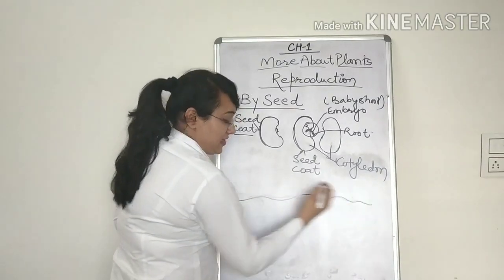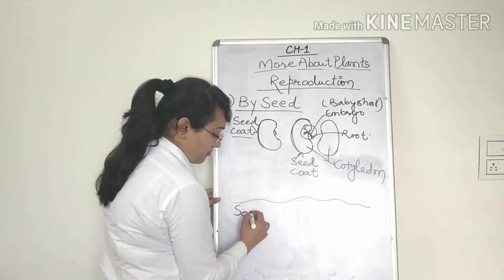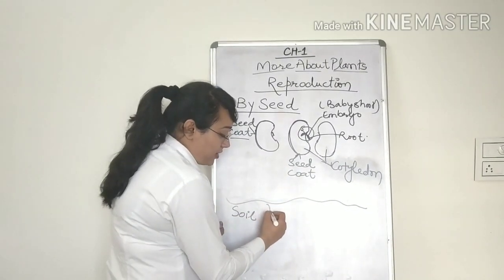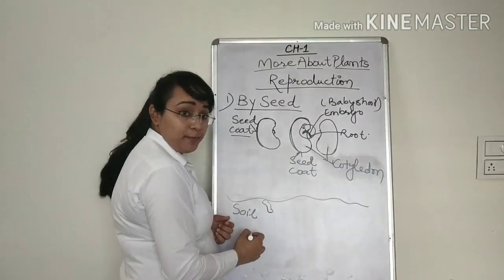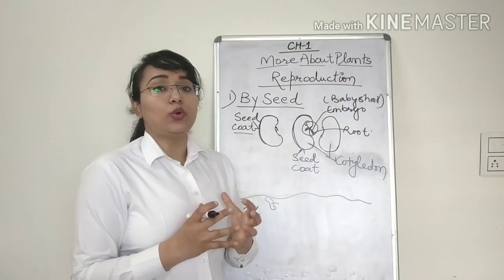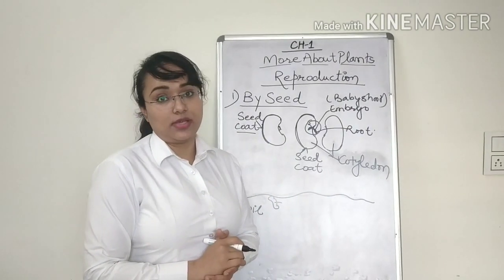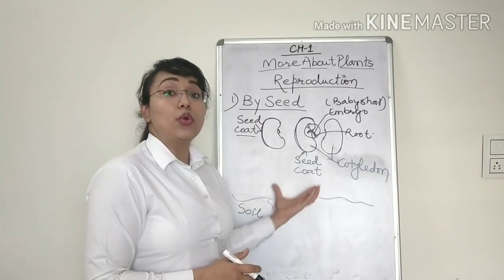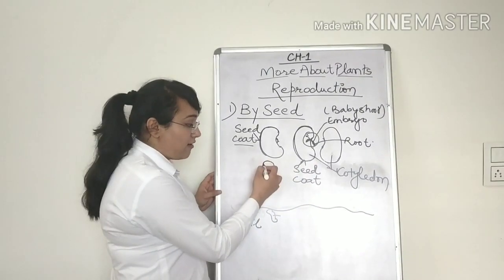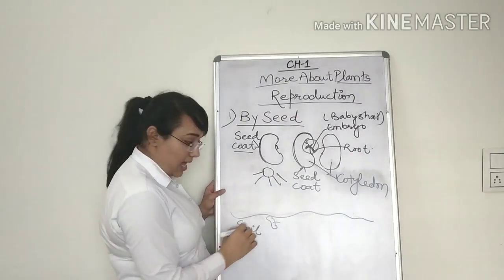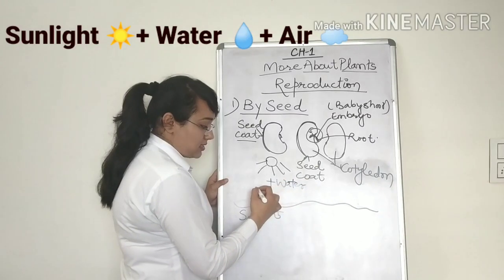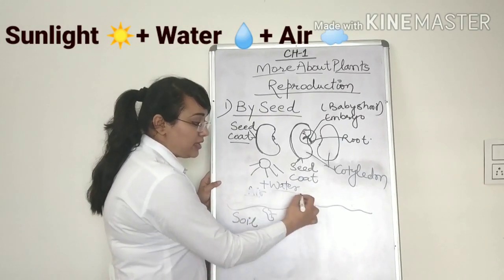This is a soil surface. Now if we take a kidney bean and we put it into a soil. Now we know that any plant can only grow in certain conditions. If we want a seed to grow into a baby plant, then the seed needs to have sunlight plus water and air. These three conditions are necessary for the seed to grow into a baby plant.